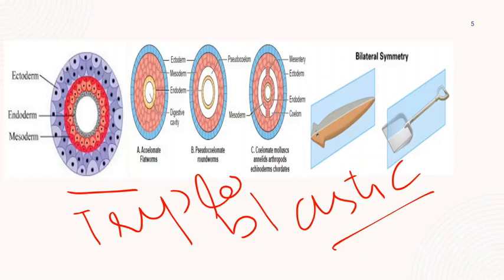Platyhelminthes are the first organisms to have organ-level organization among the invertebrate phyla we have studied so far. As you know, we studied deuterium and polyphen — they were at the cellular level of organization. They were multicellular organisms but did not have proper organs to perform proper functions.